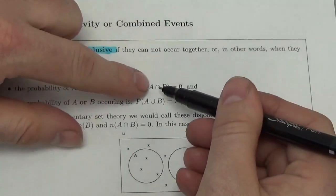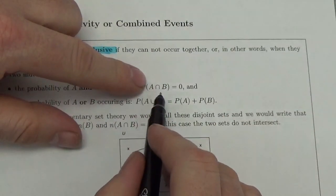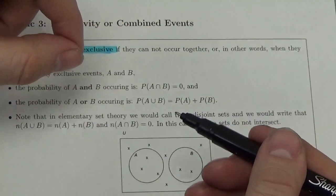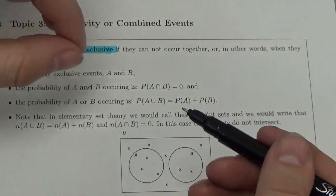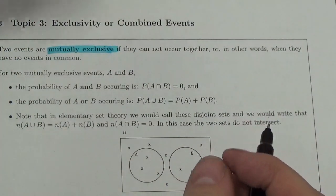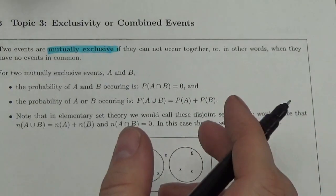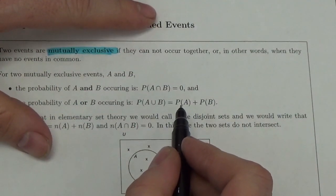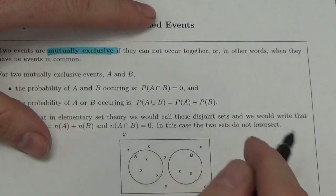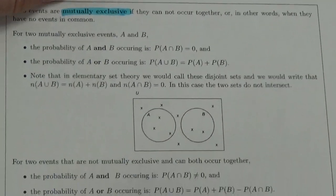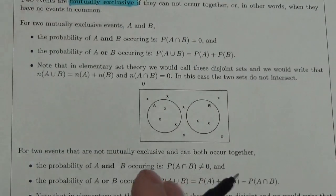The probability of A or B occurring — using the union notation, the right-side-up U symbol — means one event or the other could happen. For mutually exclusive events, this is just the sum of the two probabilities.